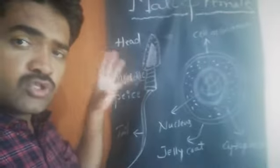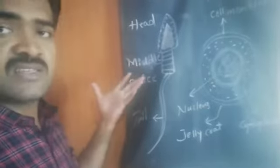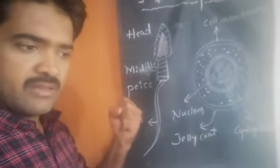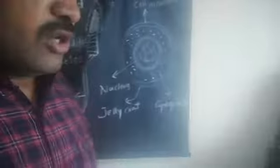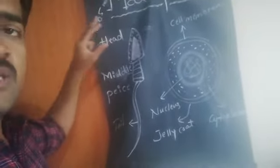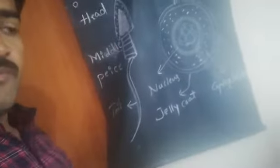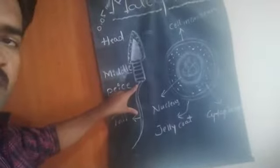This is a microscopic cell because without any equipment, with our naked eyes we cannot see this structure. It is very microscopic, measuring about 0.05 mm. The sperm has a head portion, middle portion, and a tail.